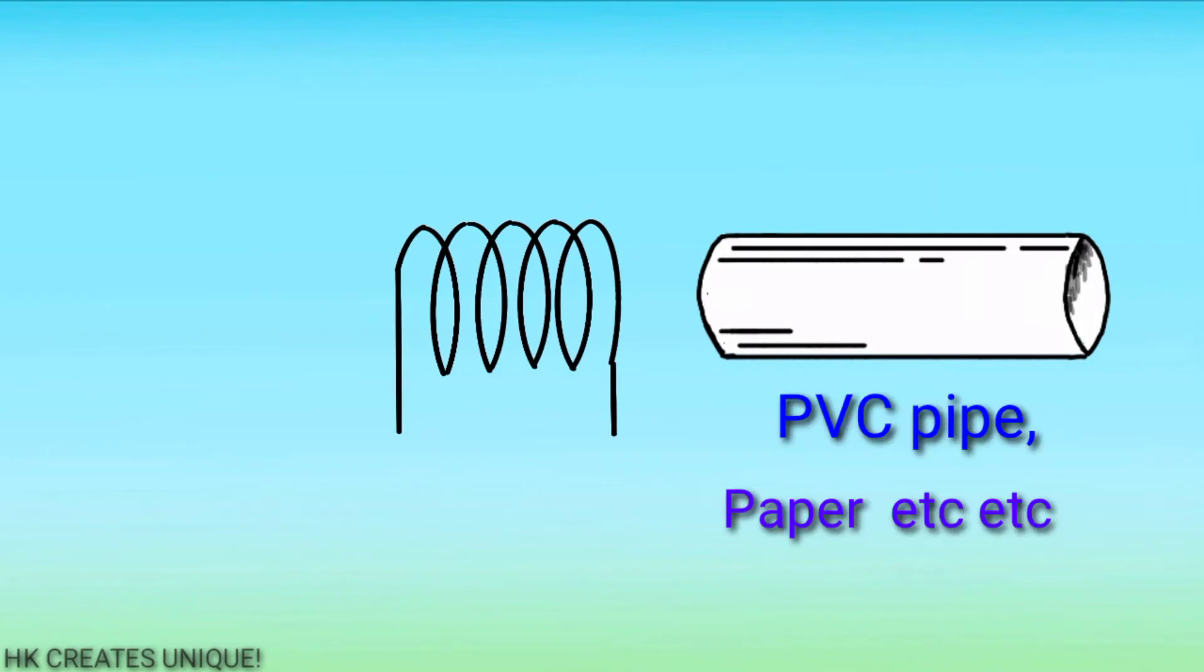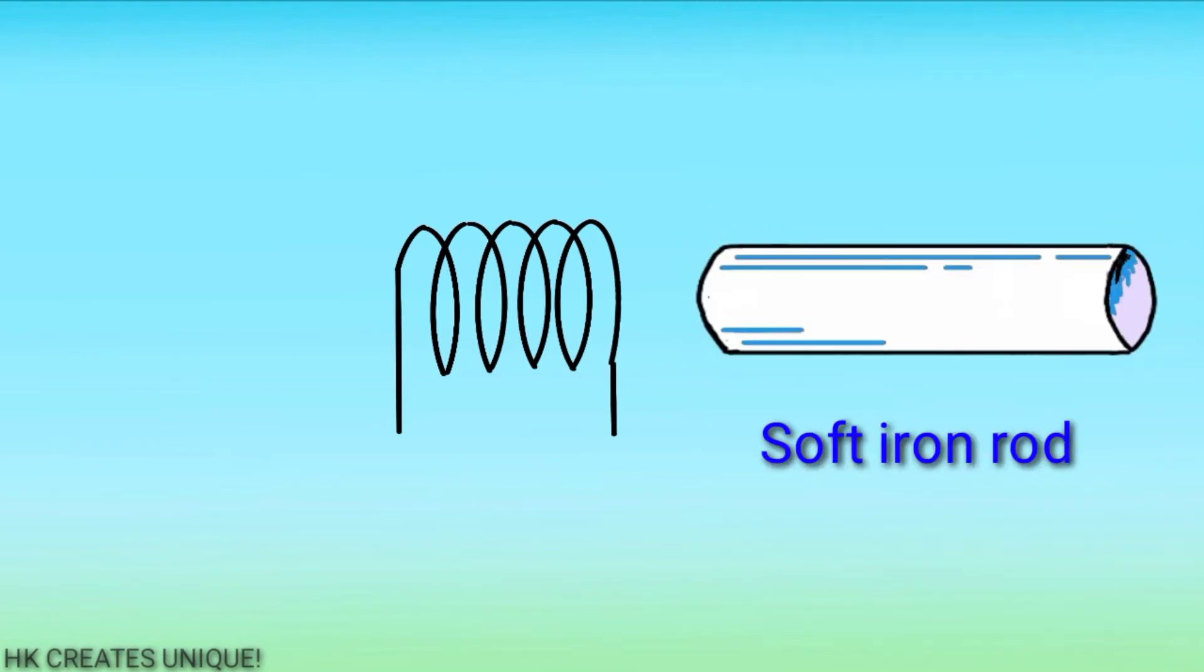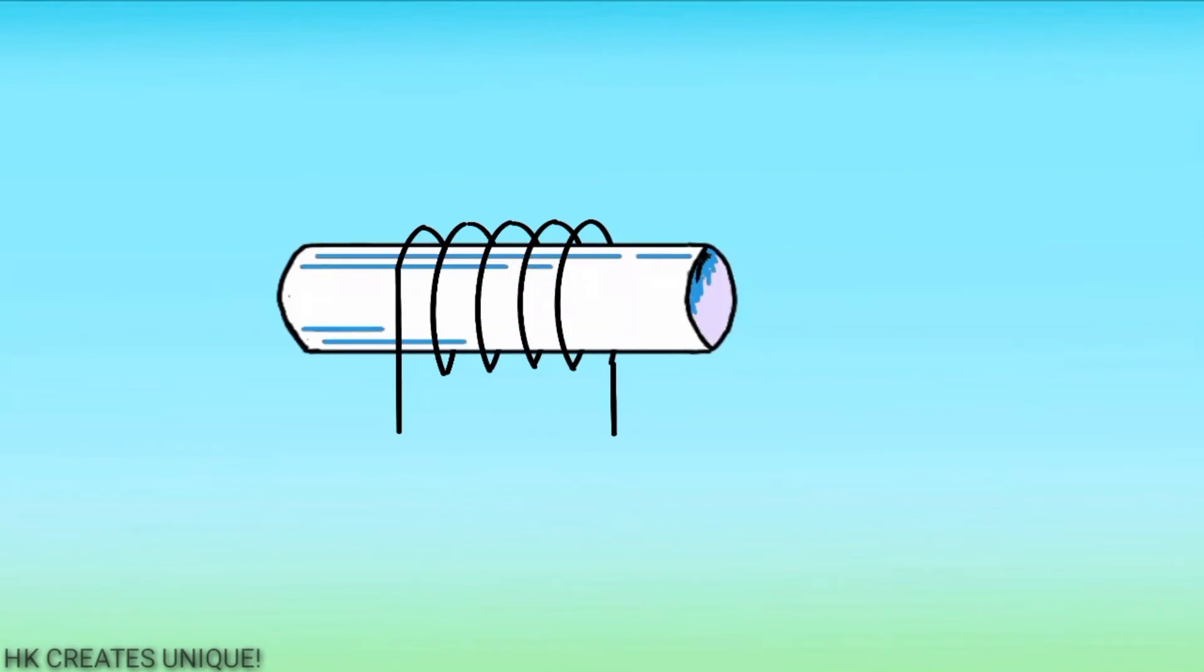But to increase strength, you need to use ferromagnetic materials like iron. But how does it increase strength of the electromagnet? In the iron rod, the atoms act as a magnet pointing in random directions.